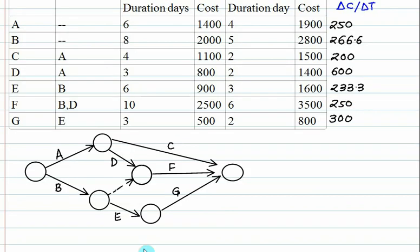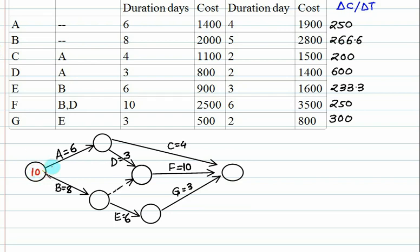Your network diagram is like this. Writing the time over the nodes: A equals to 6 days normal duration, B equals to 8 days, D equals to — we'll go for forward calculation. Let's number the nodes as 10, 20, 30. We start on the first day, so time equals zero. Node 10 to node 20 is 6 days, and node 20 to node 30 is 8 days.